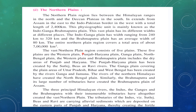The vast northern plain region consists of 5 plains: the Western plain, Punjab-Haryana plain, Ganga plain, North Bengal plain, and Brahmaputra plain. This region also includes parts of Punjab and Haryana.